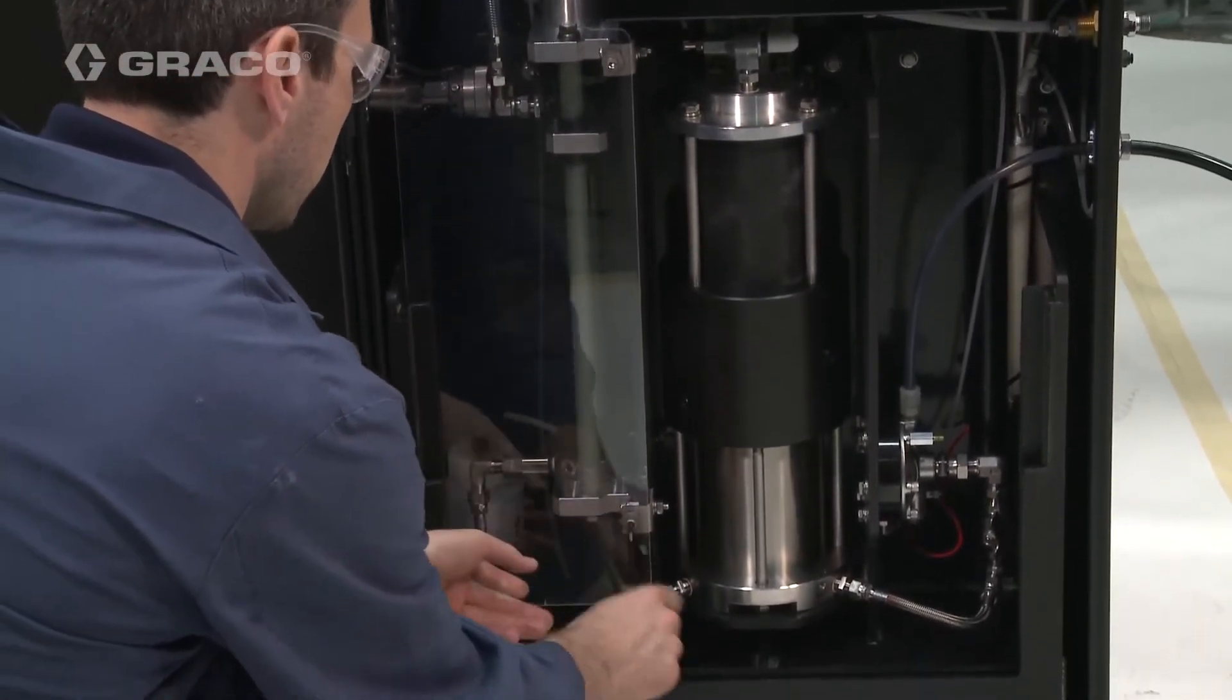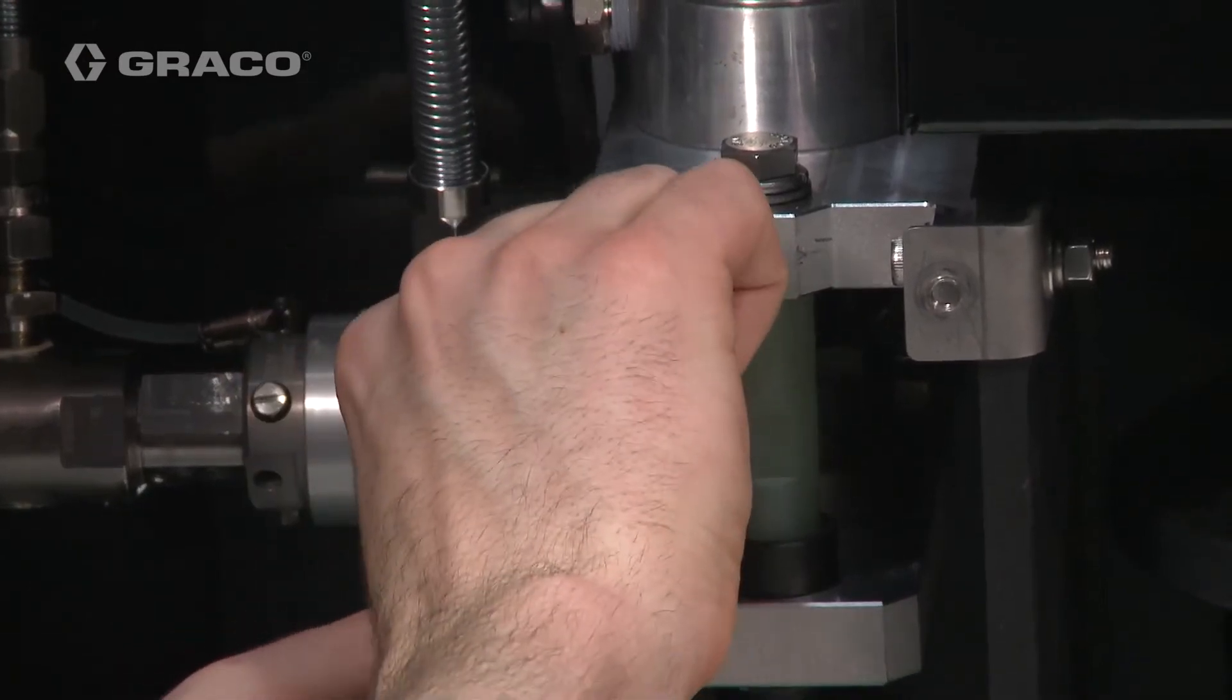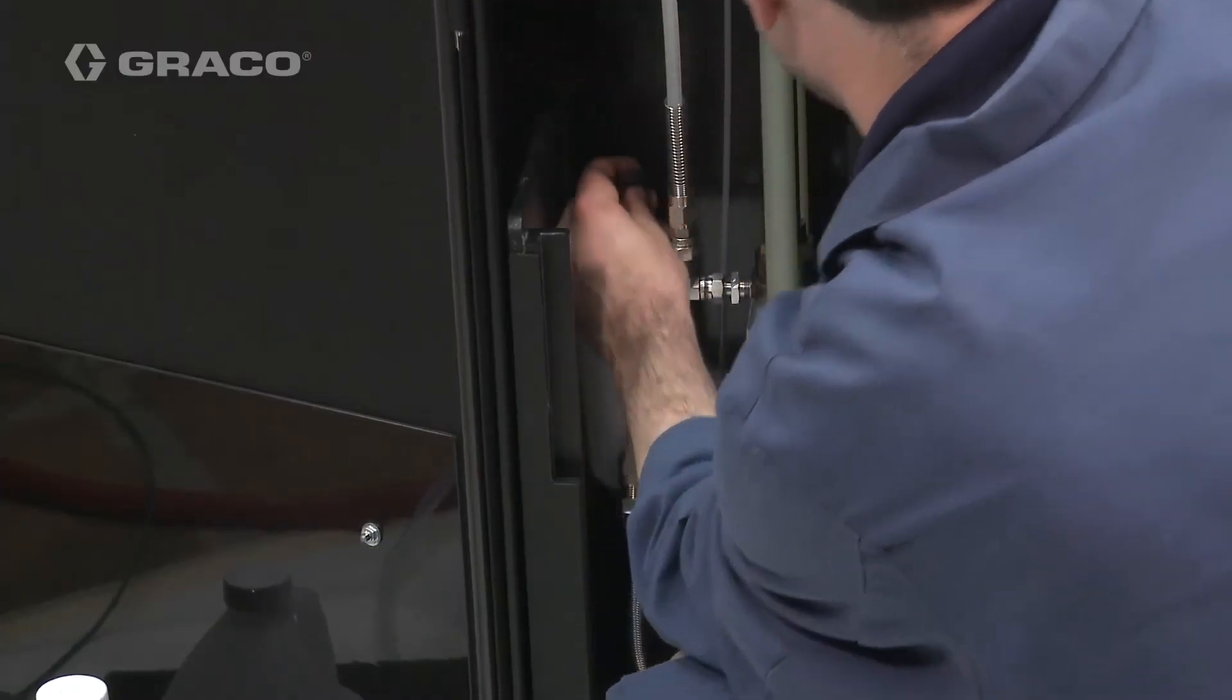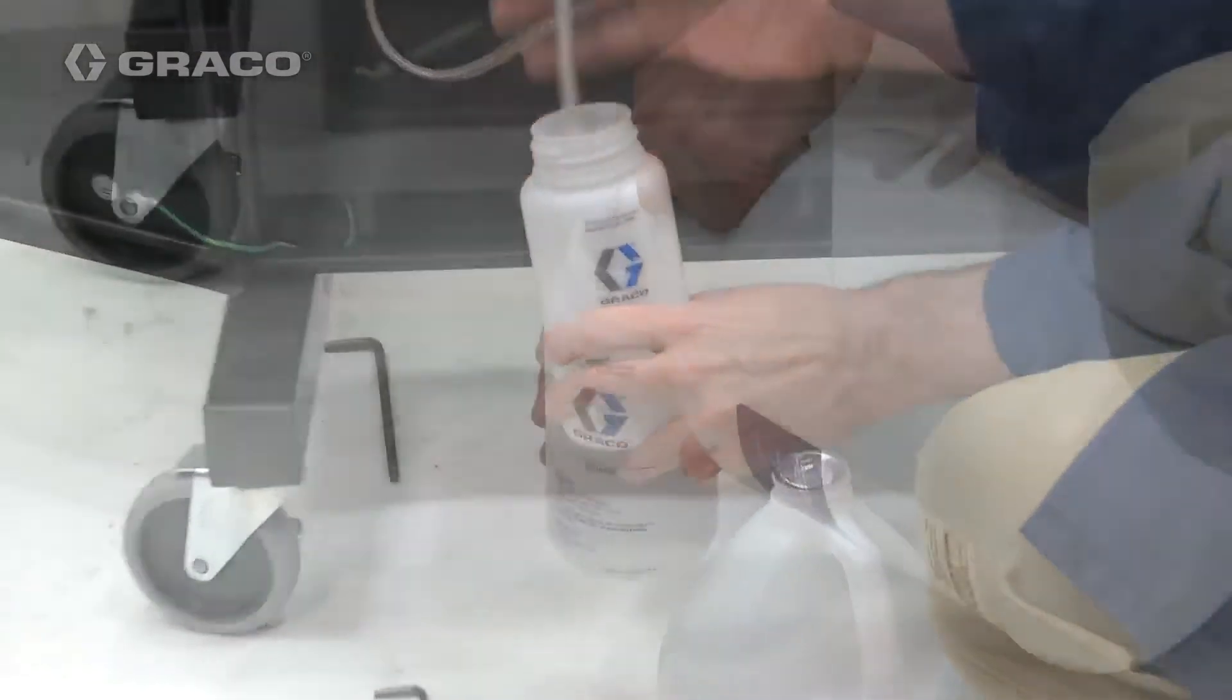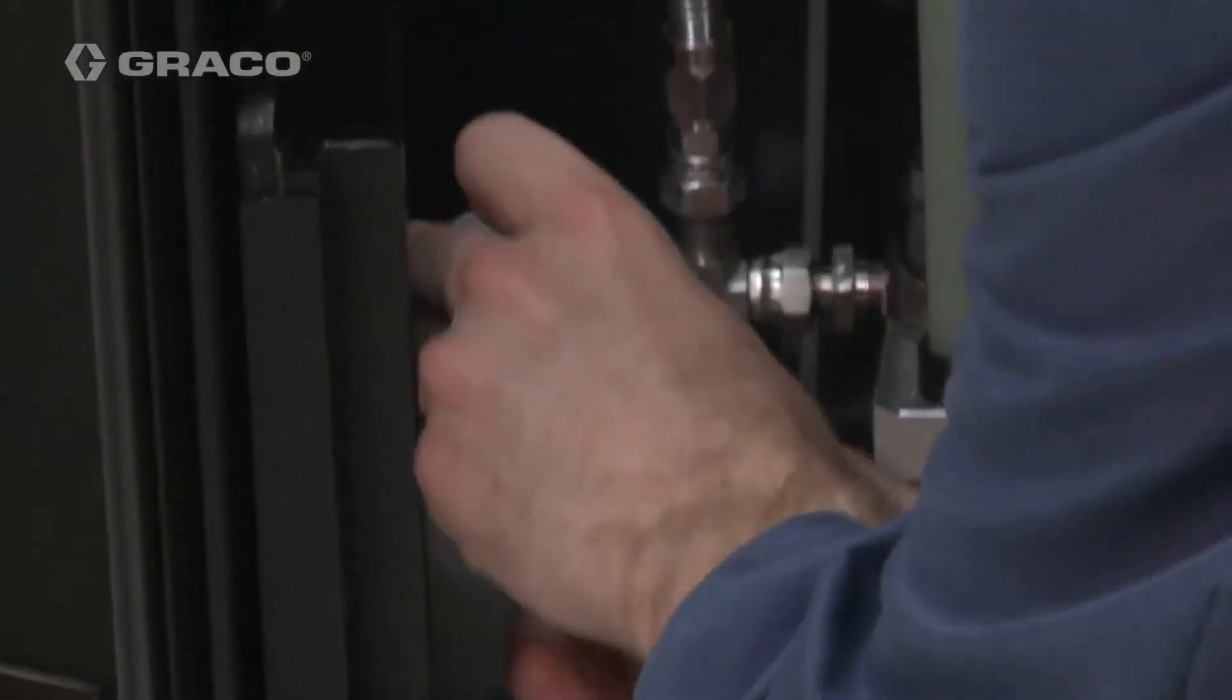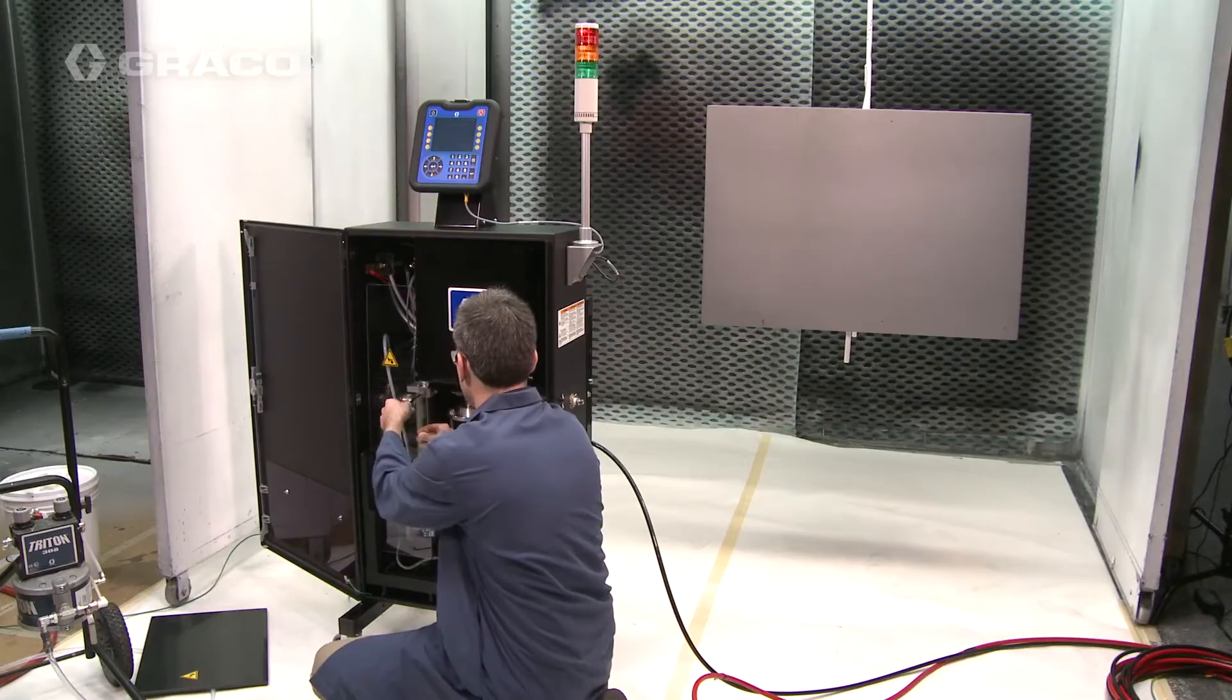Remove the isolation valve cover. Then, check for and remove the shipping tie wrap from the isolation valve. Fill the wash fluid bottle with HydraShield Cleansing Solution above the minimum line marked on the bottle. Reinstall the isolation valve cover.